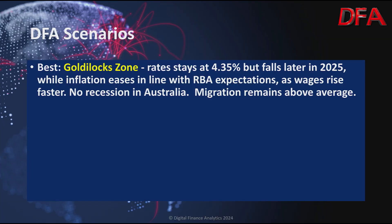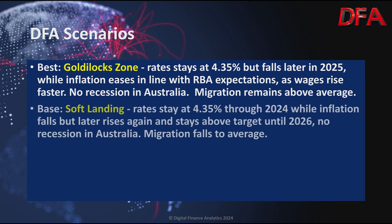It's worth revisiting our scenarios. Our best case is the Goldilocks zone, where we see rates staying at 4.35% but falling in 2025, inflation easing in line with RBA expectations, wages rising fast so we don't get a recession, and migration staying above average. The base case scenario is the one I've done the modelling off in terms of the default counts.